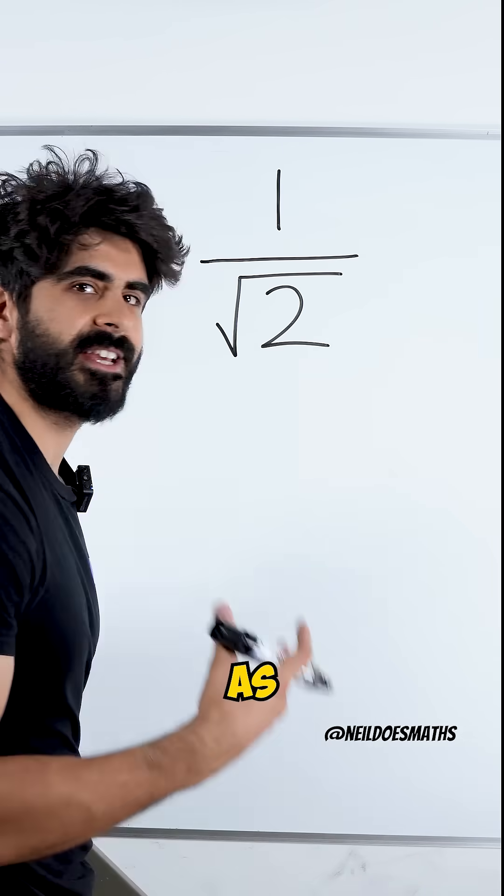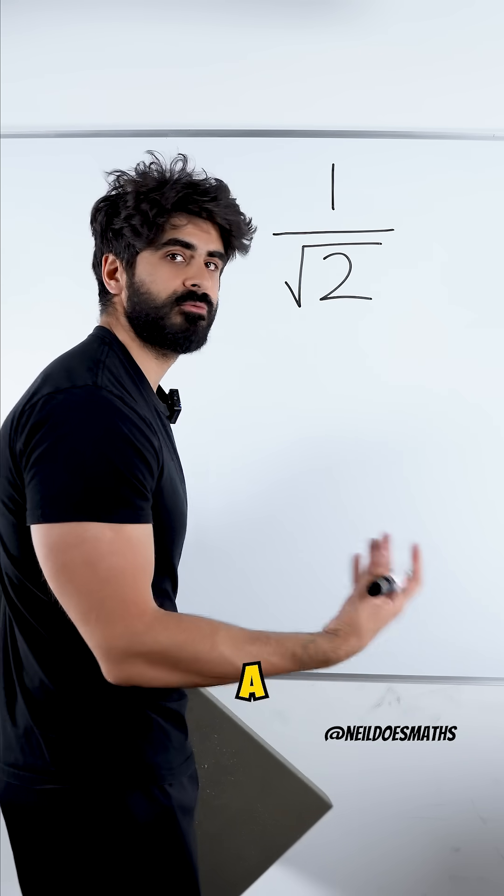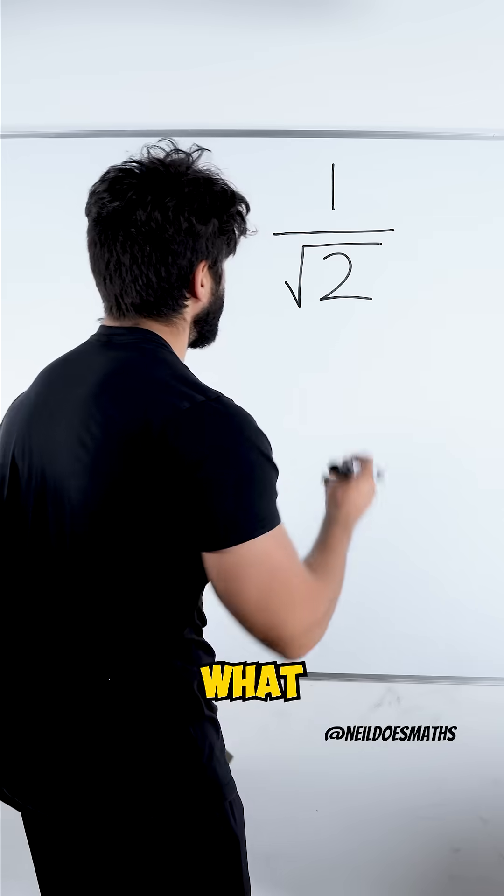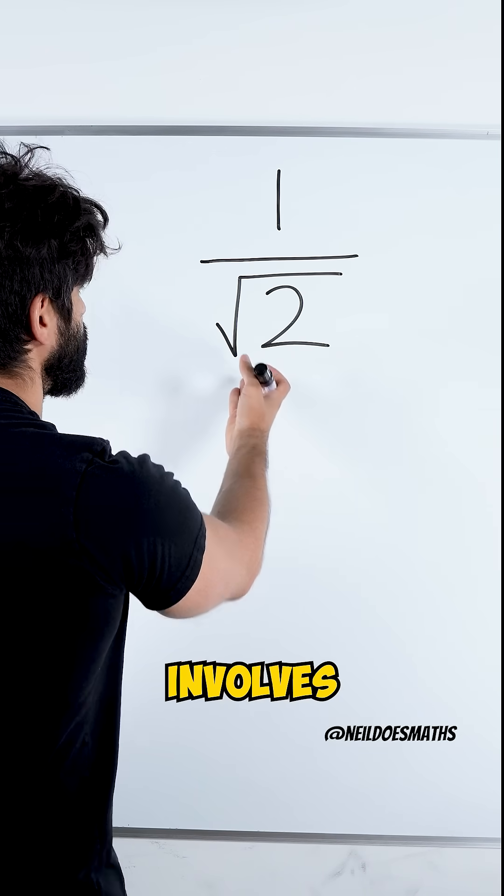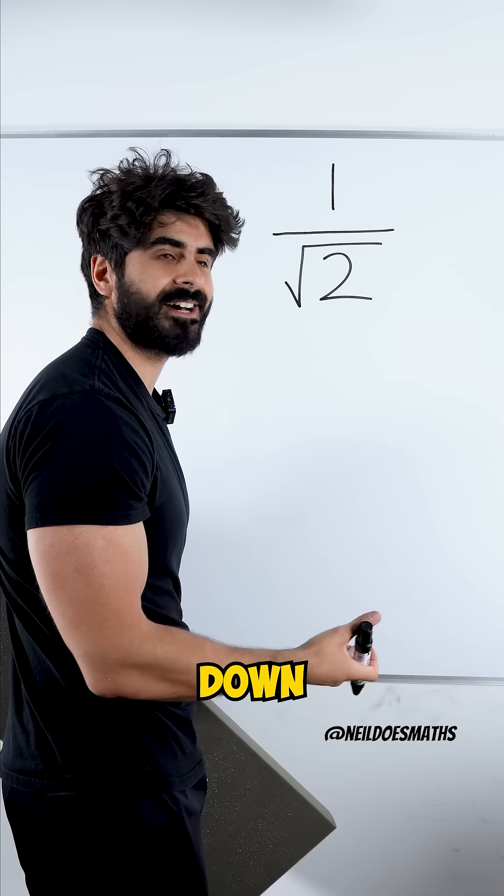This is known as a surd, or a radical if you're in the USA. Now, what is a surd? A surd is an irrational number that involves roots that cannot be simplified down to an integer.